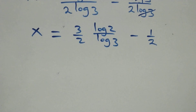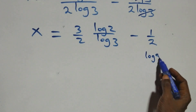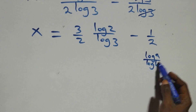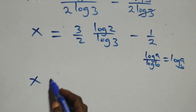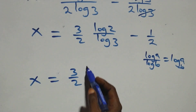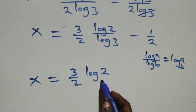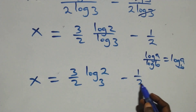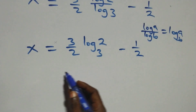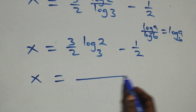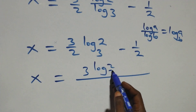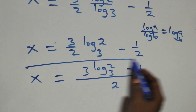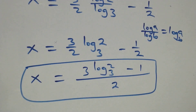We apply the change of base rule: log a over log b can be written as log a to base b. So this becomes x equals three over two times log two to base three, minus one over two. Bringing into one fraction, x equals three log two base three minus one, all over two.